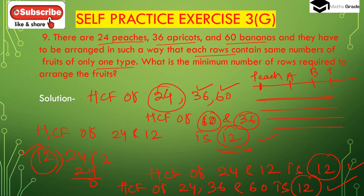So the minimum number of rows required to arrange the fruits will be 12 rows, where each type of fruit will be placed in the same number per row. So the number of rows will be 12.